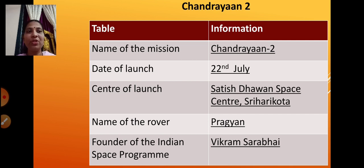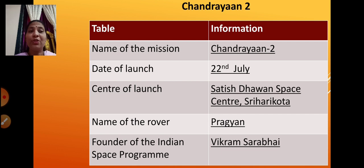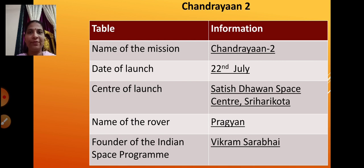The name of the mission is Chandrayaan 2. The date of launch was 22nd July. The centre of launch was Satish Dhawan Space Centre, Shriharikota — note that if you just write Shriharikota you will not get marks; you must write the full centre of launch. The name of the rover was Pragyan, and the founder of the Indian space program was Vikram Sarabhai. There are five blanks to fill, and information transfer carries five marks — if you fill in all the details correctly you will get full marks.